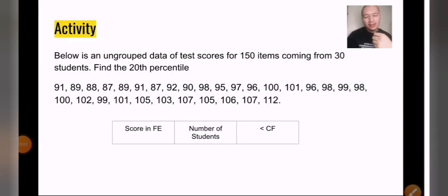Now let's try to do this activity. What I want you to do is find the 20th percentile from a set of scores taken by 30 students. The total number of the exam is 150 items. In order for you to answer this properly, you would have to build a table. The first column would be their scores in the final exam, the second column will be the number of students, and then the third column is less than cumulative frequency. You can pause this video for a while and try to answer by yourself.